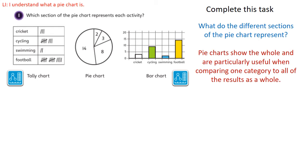So how many children did cricket? We can see from our tally chart that there were three children who did cricket. So if we look on our pie chart for three, that means that this section here must be cricket. I'm just going to put that for short.